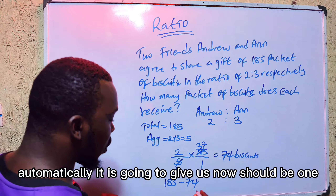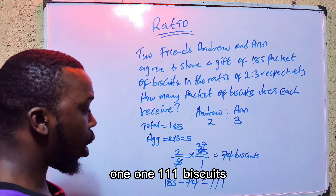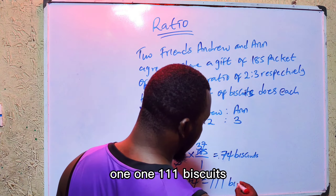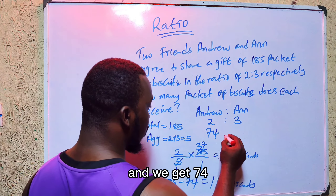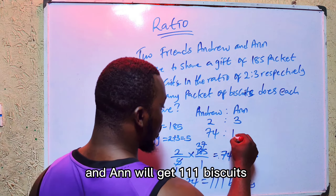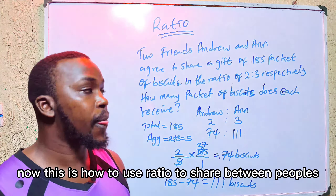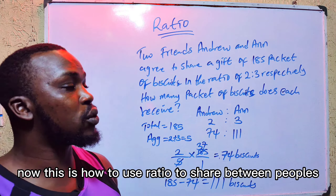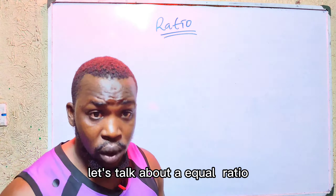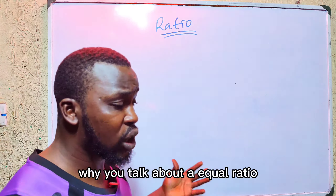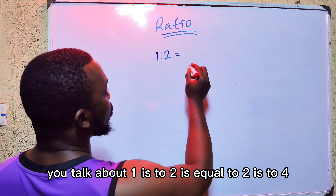To find B's share, I will do 60 minus 24, or I can do 3 over 5 times 60 — which gives 36 naira. So in this question, A gets 24 naira and B gets 36 naira. That is about using ratio to share.